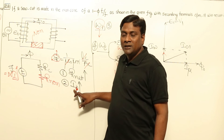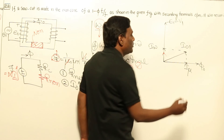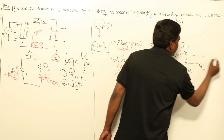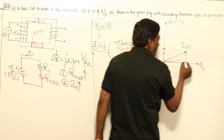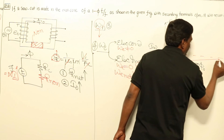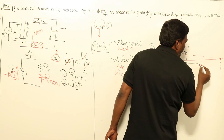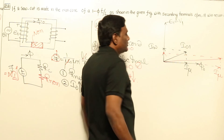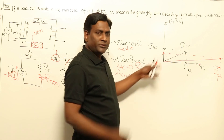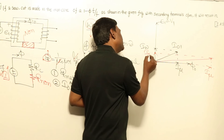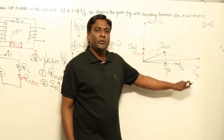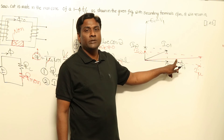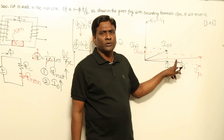But net no-load current has to increase, which means the magnetizing component of no-load current Iμ has to increase. So the new IW is reduced and the new Iμ is increased, such that the net value of no-load current increases. This is actually a very beautiful question.